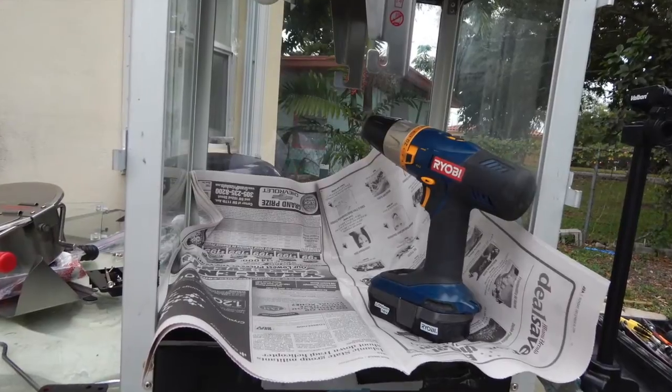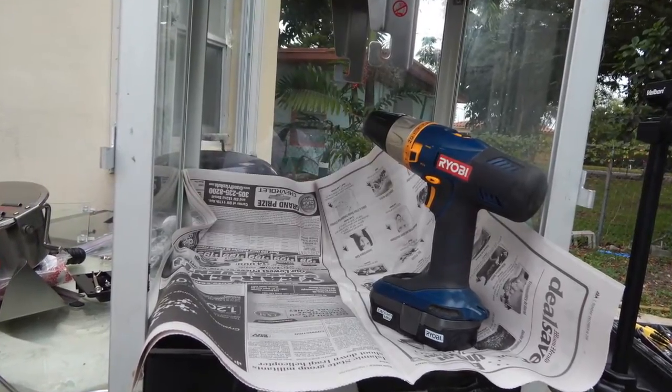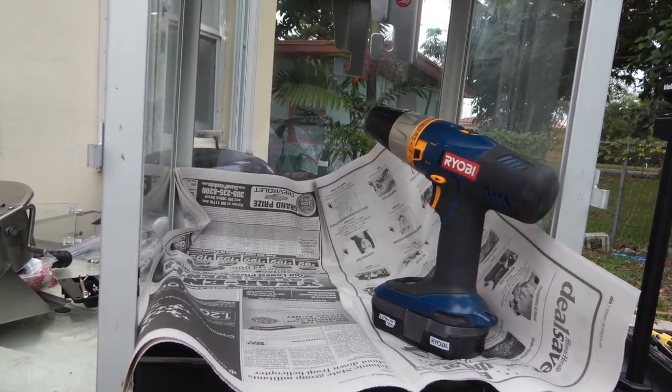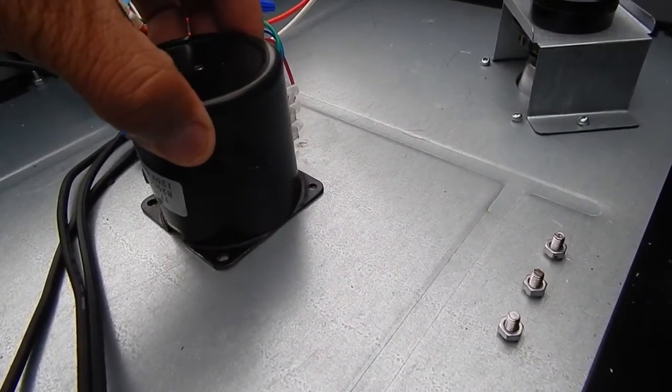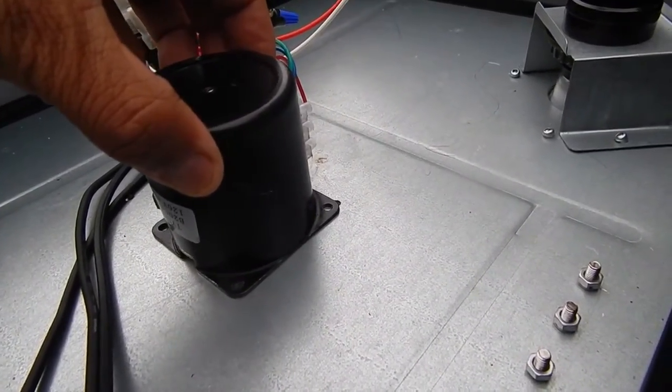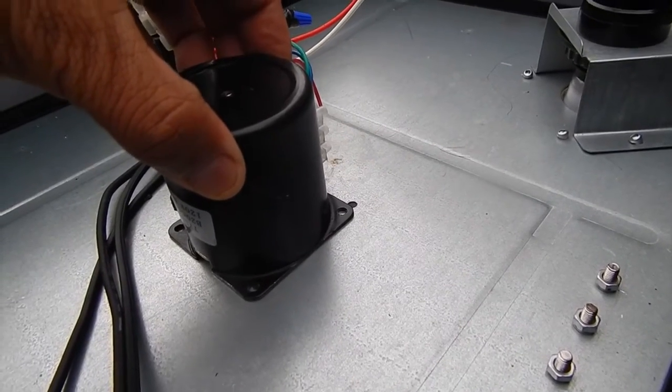I suggest that you lay newspaper at the base of the machine to catch any metal debris as you cut and drill. Place your new synchronous motor through the existing hole of the machine, then connect the sprocket to the stem of the synchronous motor.